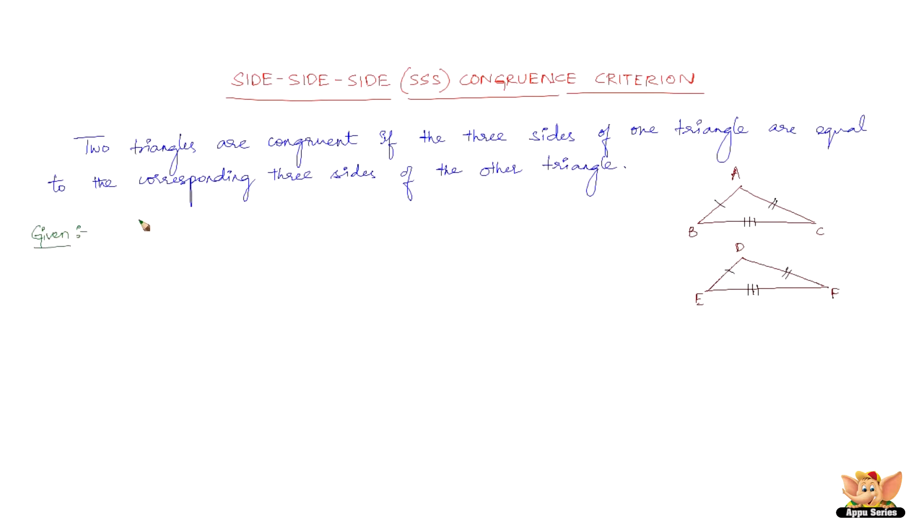What is given is that two triangles ABC and DEF are such that AB equals DE, BC equals EF, and AC equals DF.